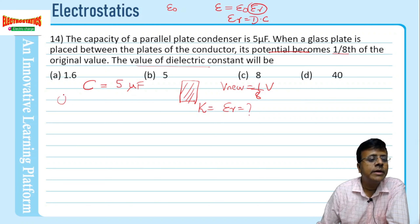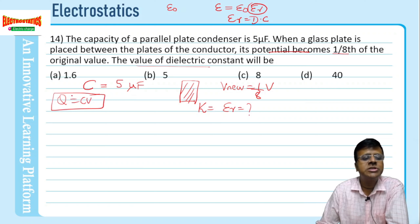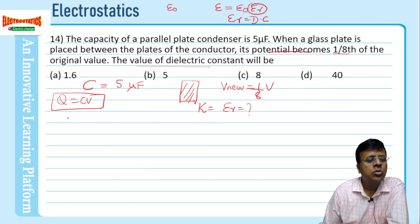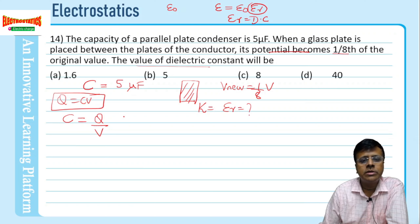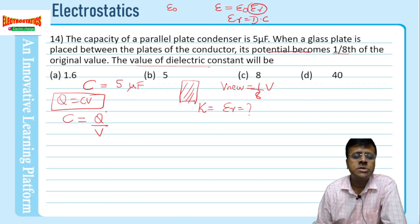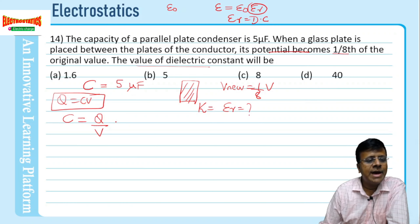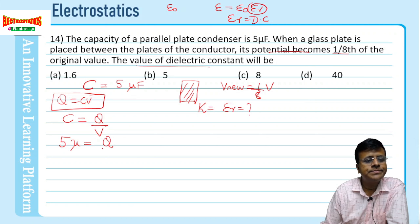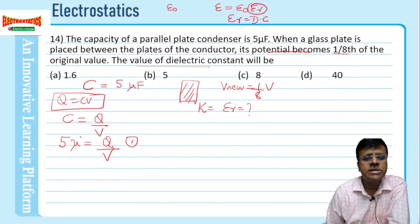We use q = CV, so C = q/V. The charge will not change even after inserting a dielectric material. In the original case, 5 microfarad equals q divided by V — call this equation number 2.